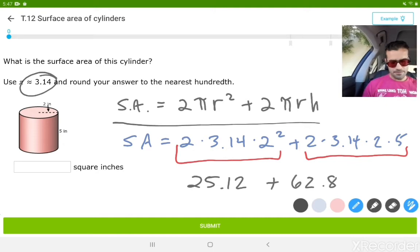Now when we add those two together, 25.12 plus 62.8, we're going to get 87.92.